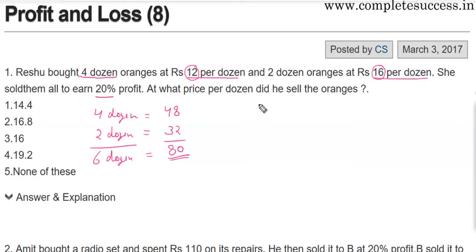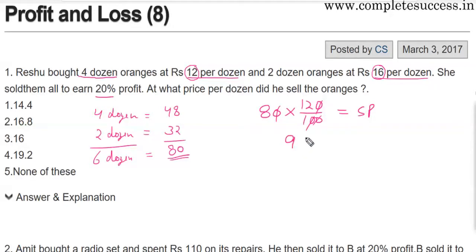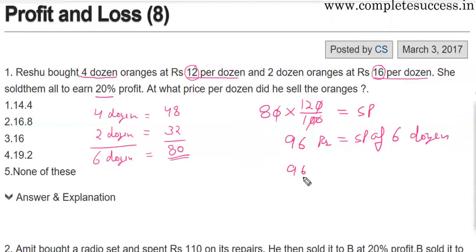He wants to earn a profit of 20%, so we take 80 rupees and multiply by 120 over 100. That gives a selling price of 96 rupees for six dozen. So the price per dozen is 96 divided by 6, which is 16 rupees per dozen.